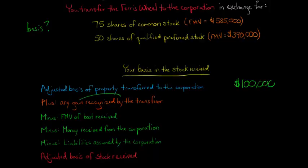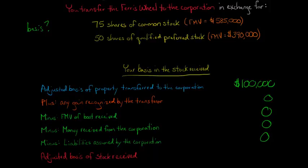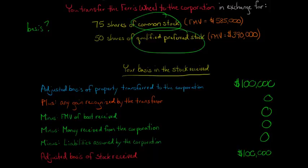If there's any gain recognized by the transferor — say, boot gain — you would add that, but we're not going to have any here, so that's zero. Then you'd subtract the fair market value of any boot received, which is also zero in this case — you're not receiving any money from the corporation, and the corporation is not assuming any liabilities. This is a simple case because I really want to focus on the allocation issue. So the adjusted basis of all the stock you're receiving, if we treat it as one class, would be $100,000. We have to divide that among the shares of common stock and the shares of qualified preferred stock.